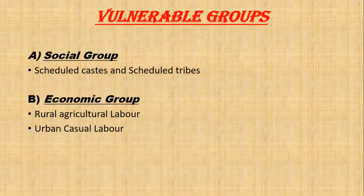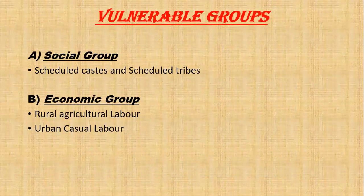Now let's look at the vulnerable groups. We have two types of groups: social and economic. In the social group, we have scheduled caste and scheduled tribe. In the economic group, it's rural agricultural laborers and urban casual laborers.